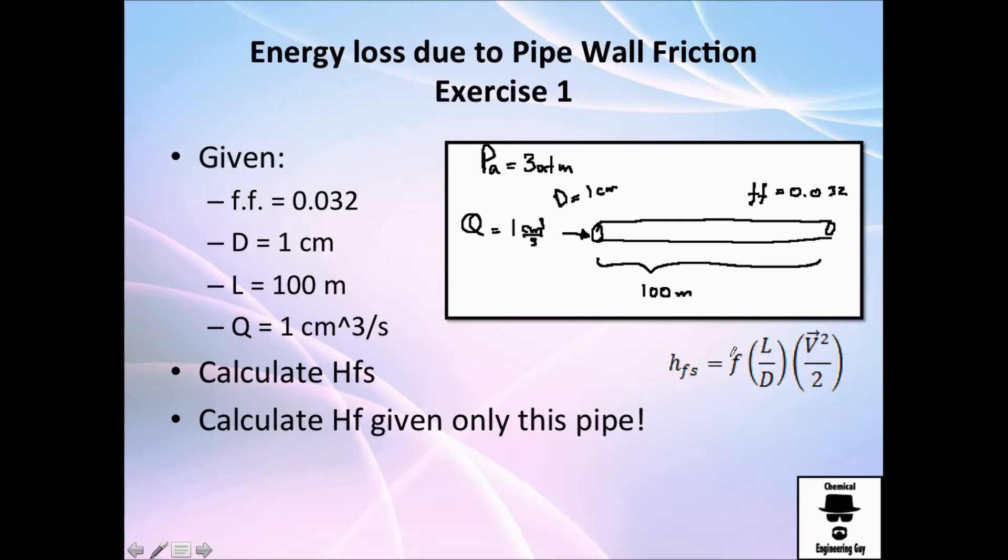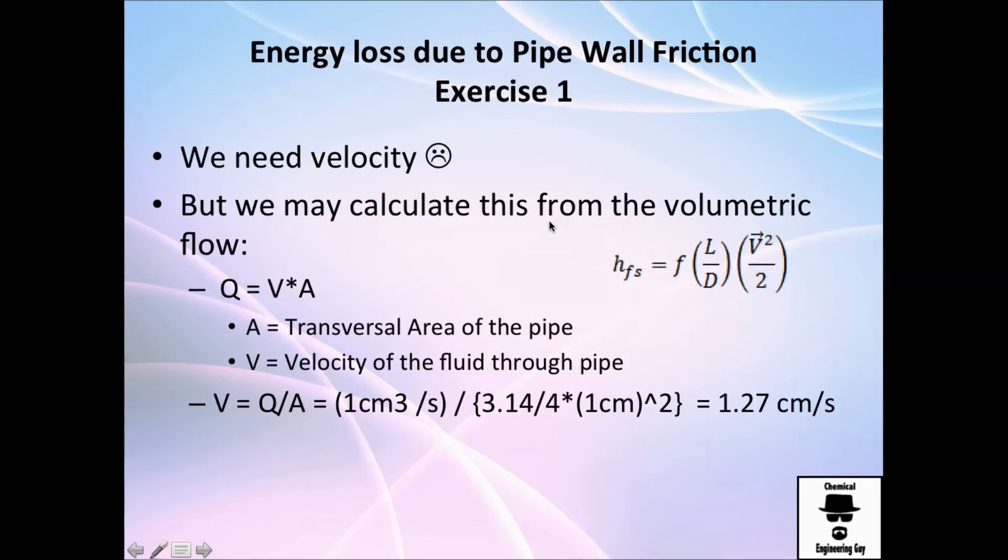In order to calculate the friction loss is this F value which we already got here, the length which we already know, the diameter which we have it, and the velocity here. And the thing here is we don't have the velocity so we will have to calculate the velocity. How do we do that?